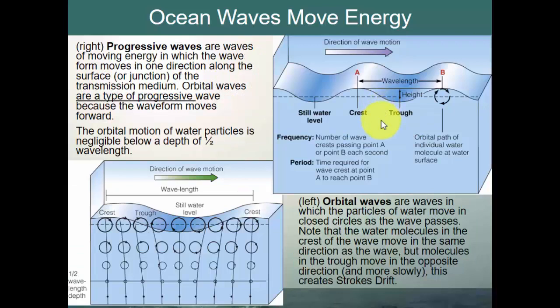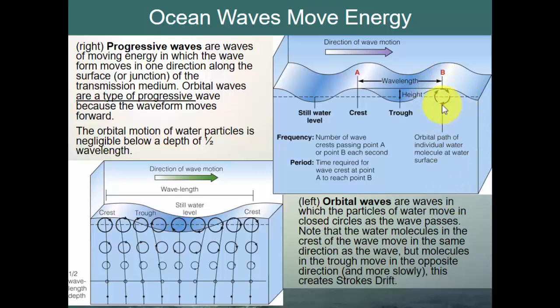Wave height is between the top of the crest and the base of the trough. Frequency is the number of wave crests passing a point each second. Period is the time required for a wave crest at point A to reach point B. Orbital waves are waves in which the particles of water move in closed circles. Water molecules in the crest move in the same direction as the wave, but molecules in the trough move in the opposite direction and more slowly — which is why you have that Stokes drift.